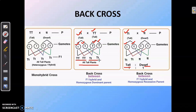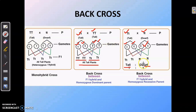In the second cross, when a hybrid F1 tall plant is crossed with a homozygous recessive dwarf parent, the offspring obtained are tall to dwarf in the ratio 1:1. The tall plant produces two types of gametes — capital T and small t — whereas the dwarf parent produces only one type of gamete, small t. The offspring are heterozygous tall (capital T small t) and dwarf (small t small t). This second type of back cross — where the F1 hybrid is crossed with a homozygous recessive parent — is also known as a test cross.